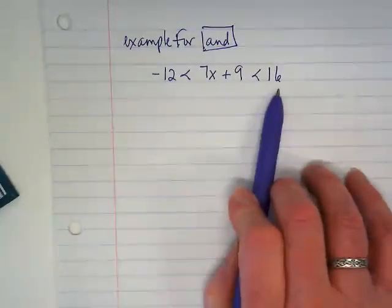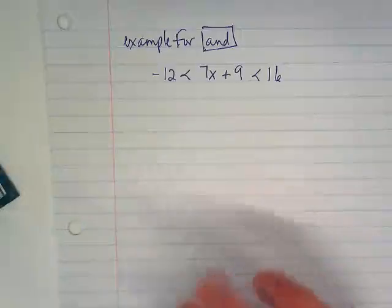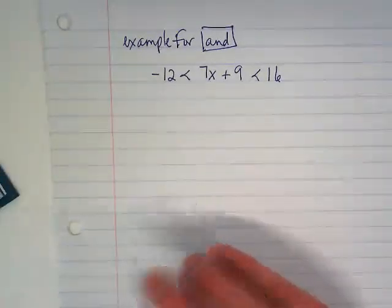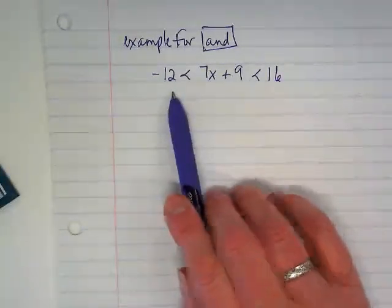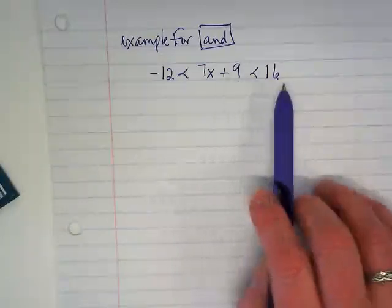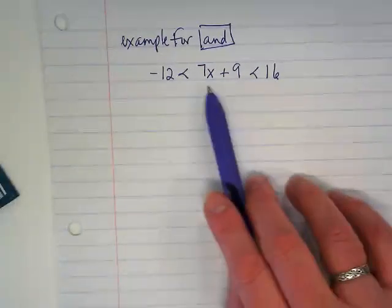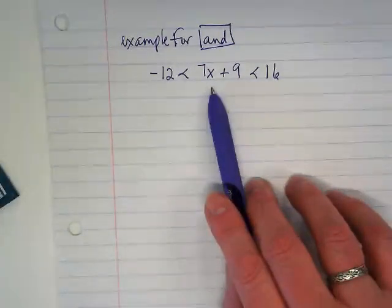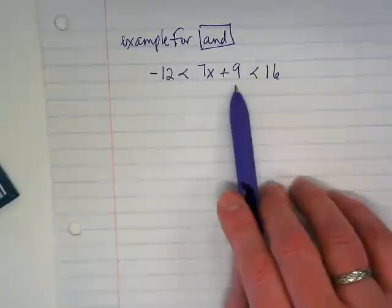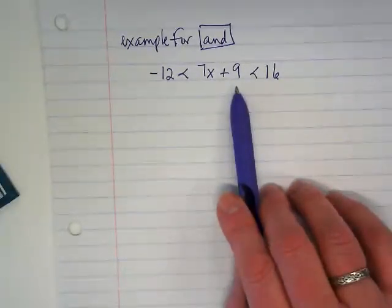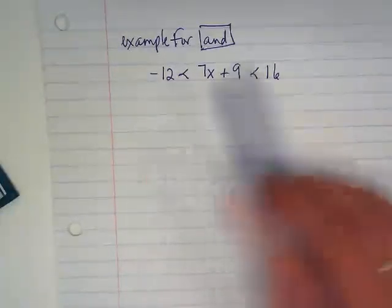What are my like terms in this? Negative 12, 9, and 16. Our goal is to get the x alone in the middle of the inequality. The first thing we want to deal with is the 9. We'll deal with the 7 after.